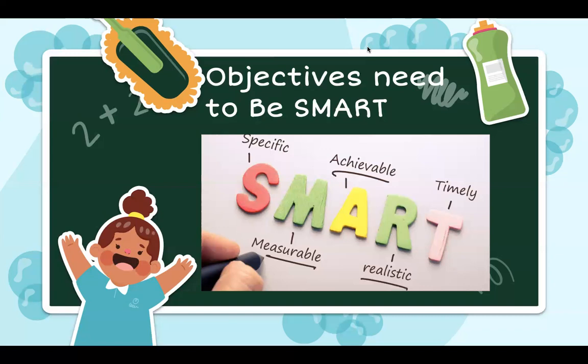Finally, objectives should be Time-specific. When you say you want to increase profit, you must specify in how much time — one year, two years, five years. A proper SMART objective sounds like: 'I want to increase my market share by five percent in one year,' or 'I want to achieve profit growth by three percent in the next three years.' These are what are called SMART objectives.